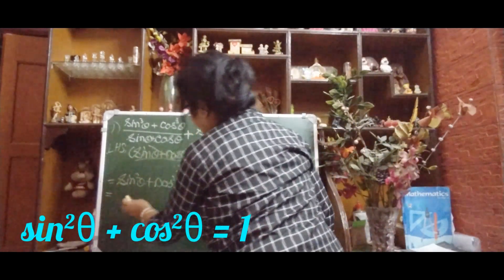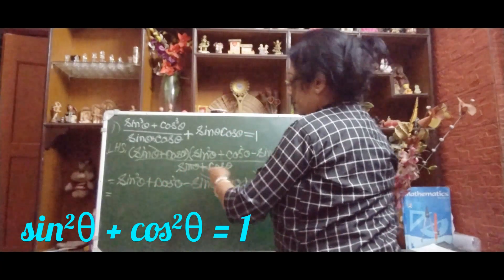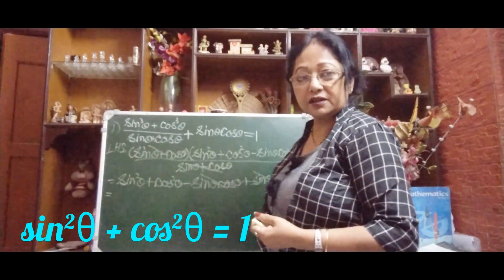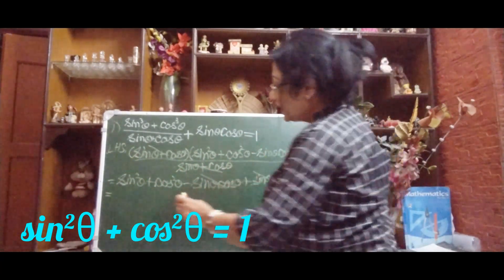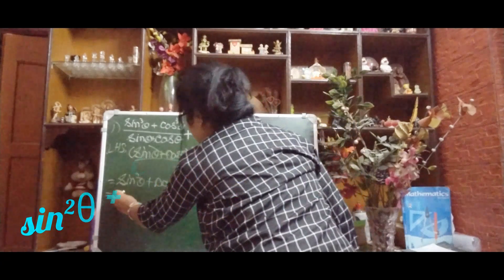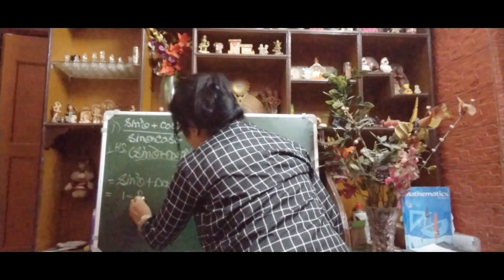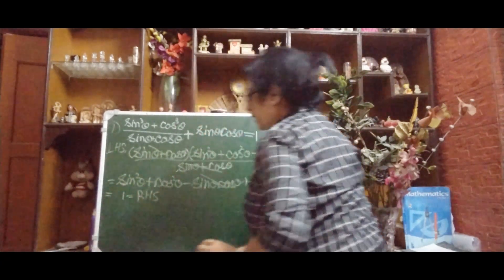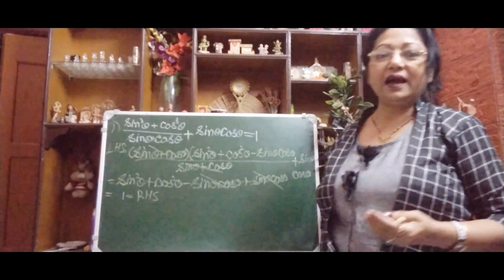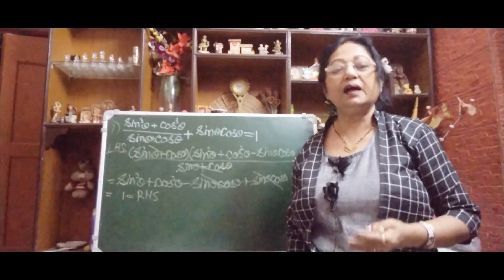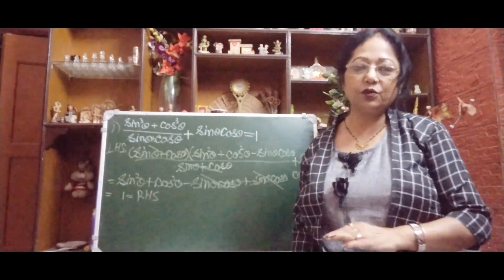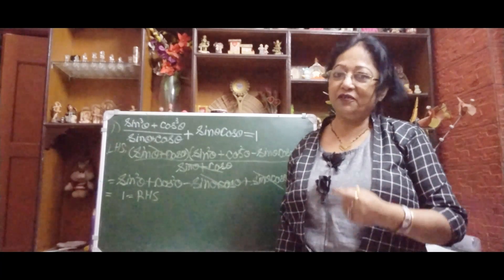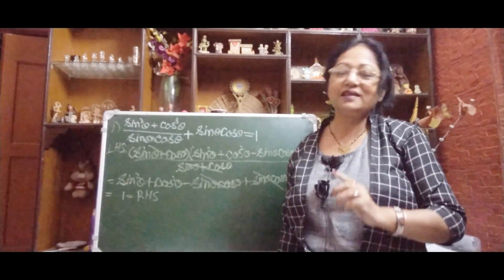What remains is sin²θ + cos²θ, which by the Pythagorean identity equals 1 — which is our right hand side. So if you apply the algebraic identities, you can prove left hand side equals right hand side very easily.